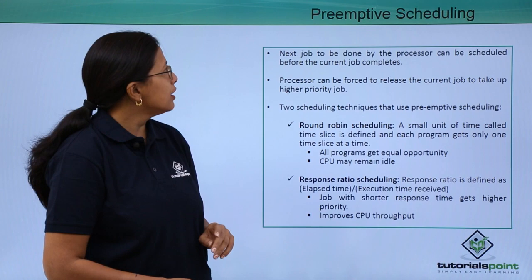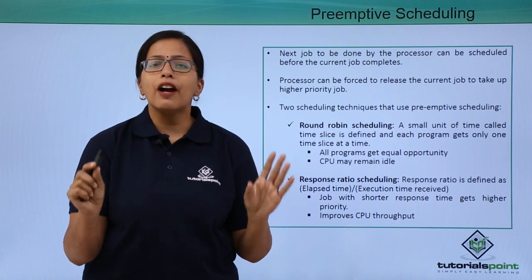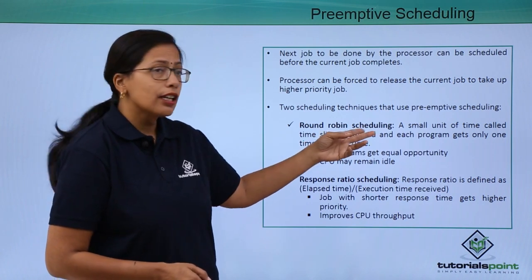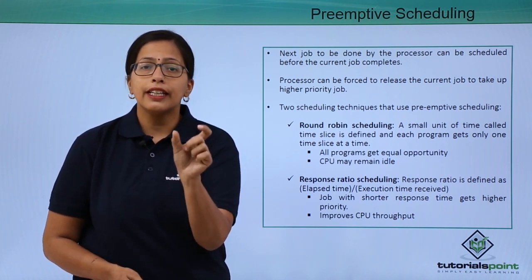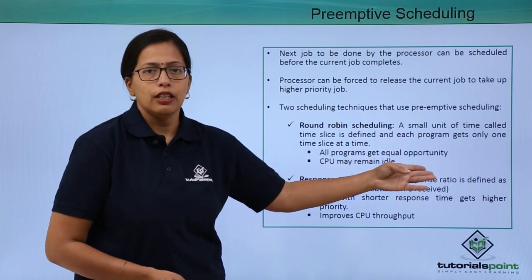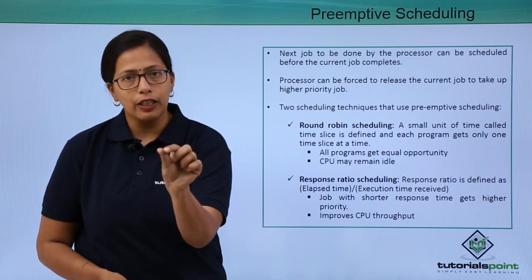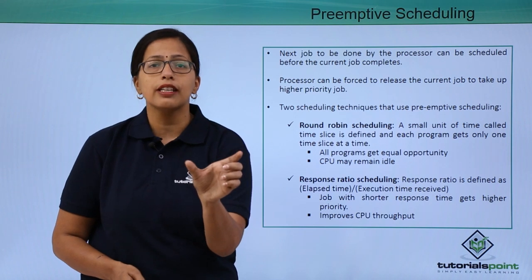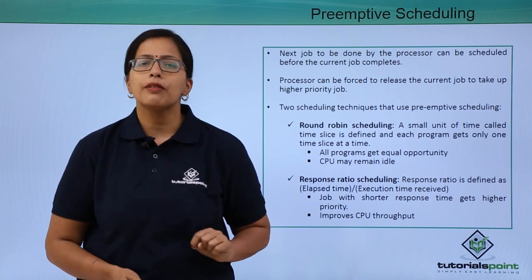In Round Robin scheduling, the processor time is divided into small time slices. Each time slice is defined, and the programs waiting to be executed wait until they get their own time slice. All programs get equal opportunity — job one executes during its time slice, and only then does job two come. But this creates a problem: if the time slice is two microseconds and the work finishes in one microsecond, the CPU will remain idle for the remaining one microsecond.